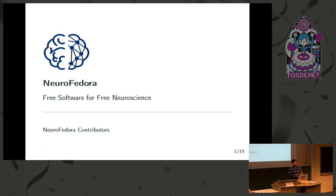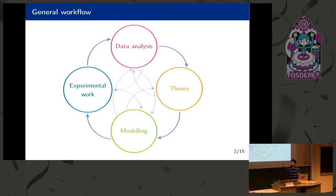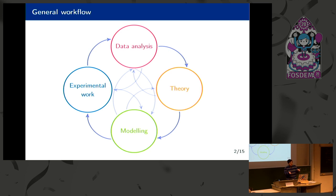Before we dig deeper into NeuroFedora, let's talk about how we do research in neuroscience — the research pipeline. As you can see in the diagram, it's a simplified but actually quite complex process. The general workflow goes from data analysis to theory, and then we have modeling of neuroscience structures, and then experiments and so forth.